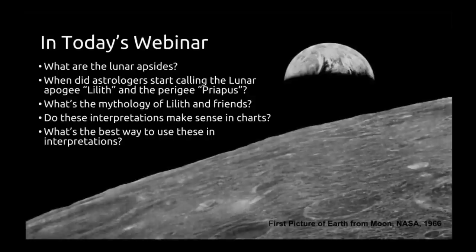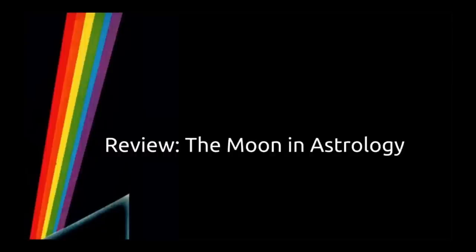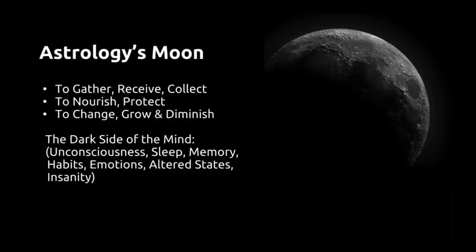We'll cover what the lunar apsides are, when we started calling these special chart points Lilith and the perigee point Priapus, the mythology of Lilith and her friends, whether these interpretations make sense in real charts, and the best way to use these positions in your own interpretations. We're going to start with the very basic — what is the moon — and build one concept upon another so we're all on the same page by the time we get to the Lilith material.